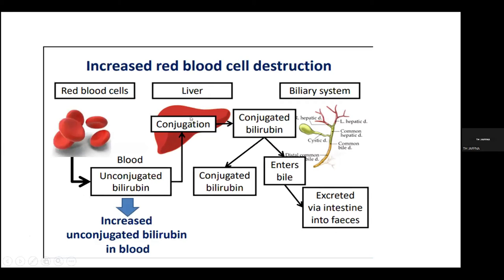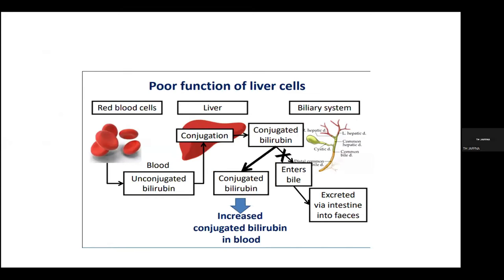As mentioned, increased unconjugated bilirubin in blood is caused by increased hemolysis. If there is a problem in the liver cells due to hepatitis, it causes increased conjugated bilirubin in the blood. And the third cause is obstruction — what we call obstructive jaundice.